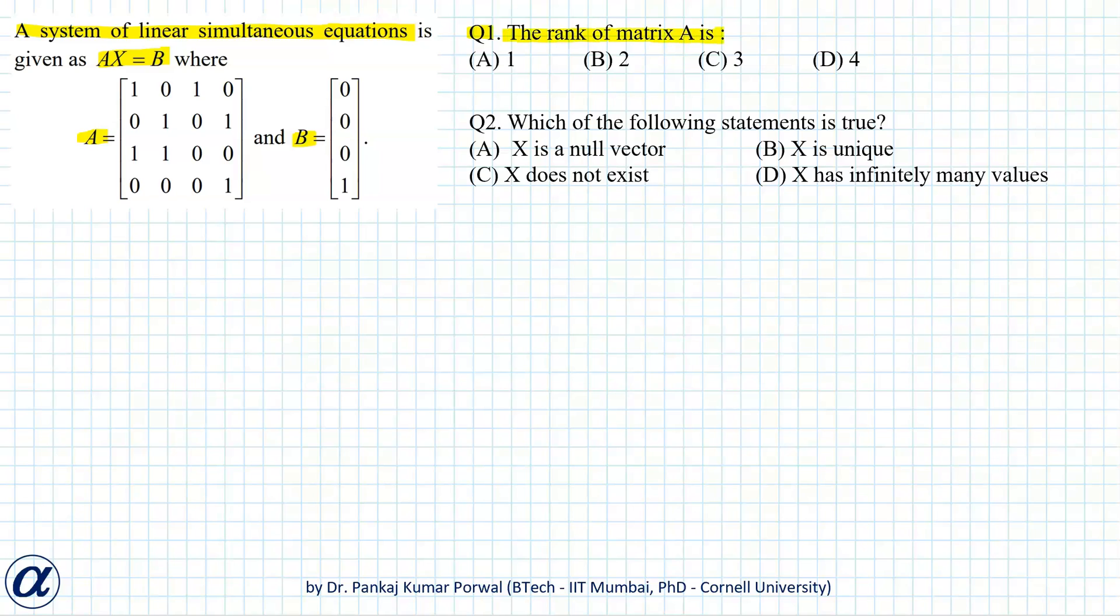Because A is a 4 by 4 matrix which is a big size, we will use row echelon form to find the rank of this matrix. Here I will use row operation R3 to R3 minus R1 plus R2. For that I will have to subtract 1 plus 0, that is minus 1 from here.